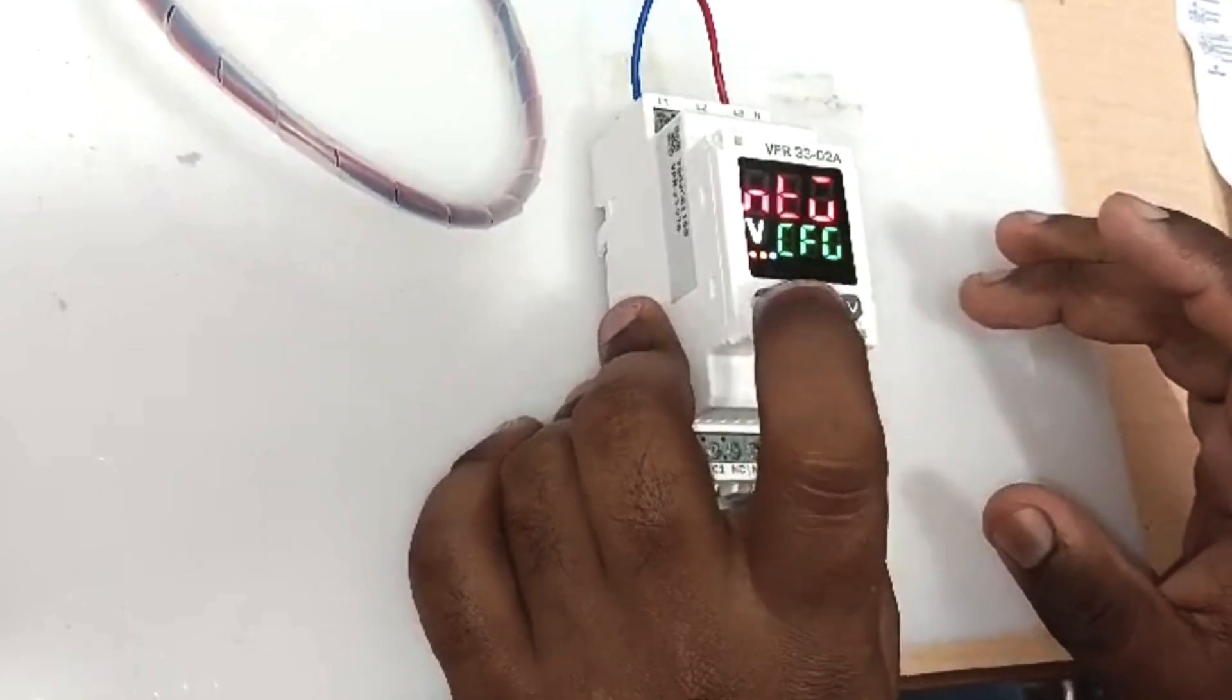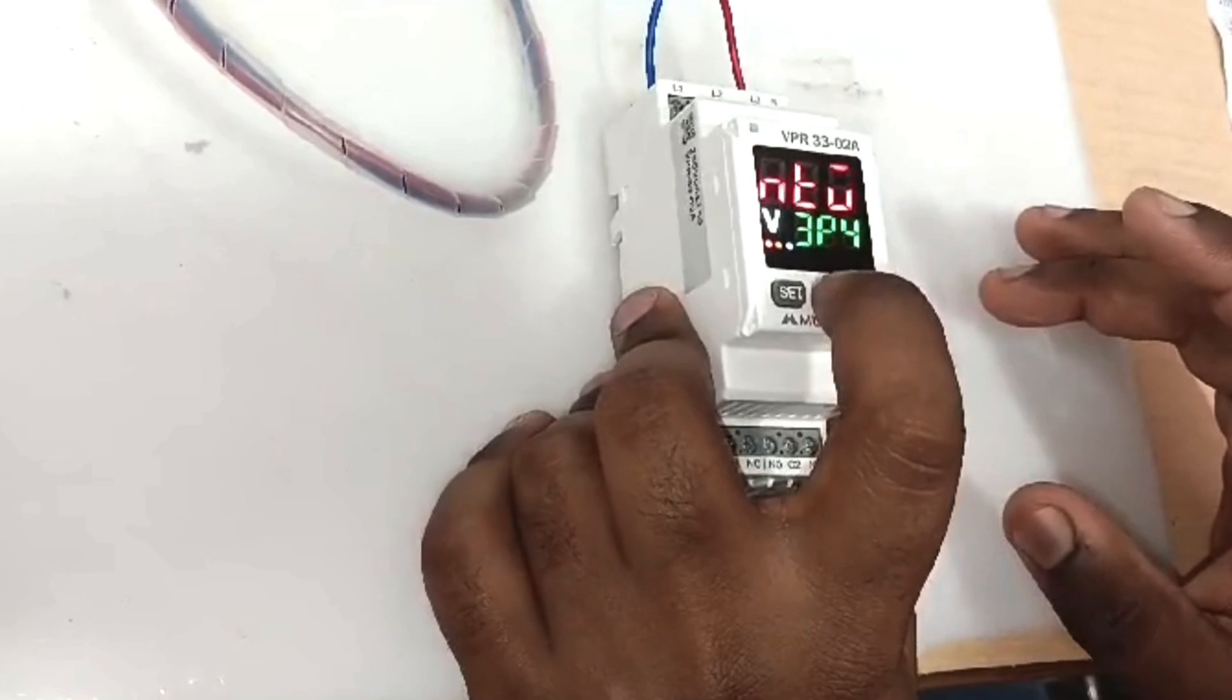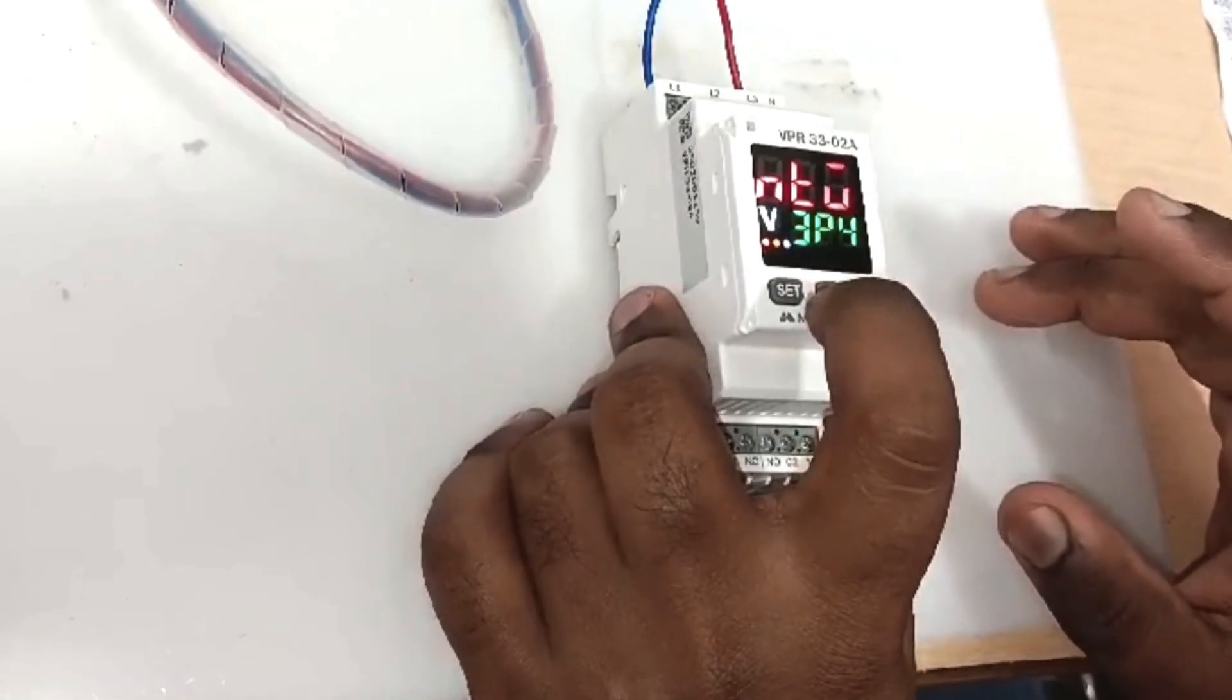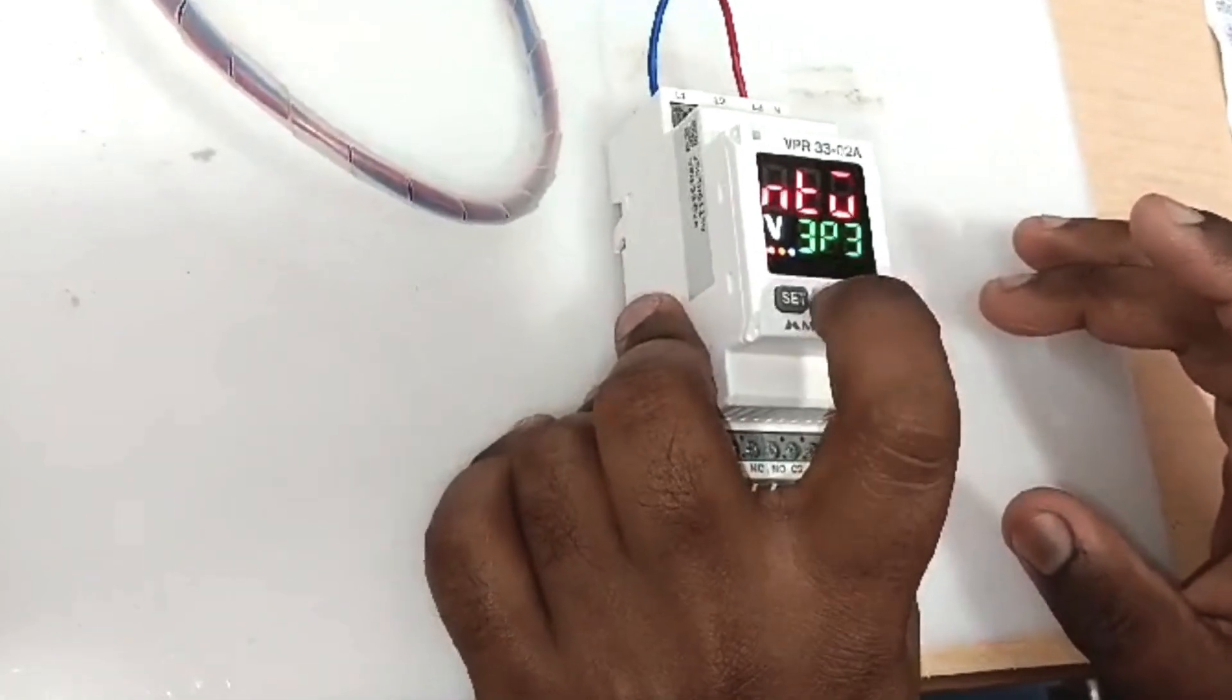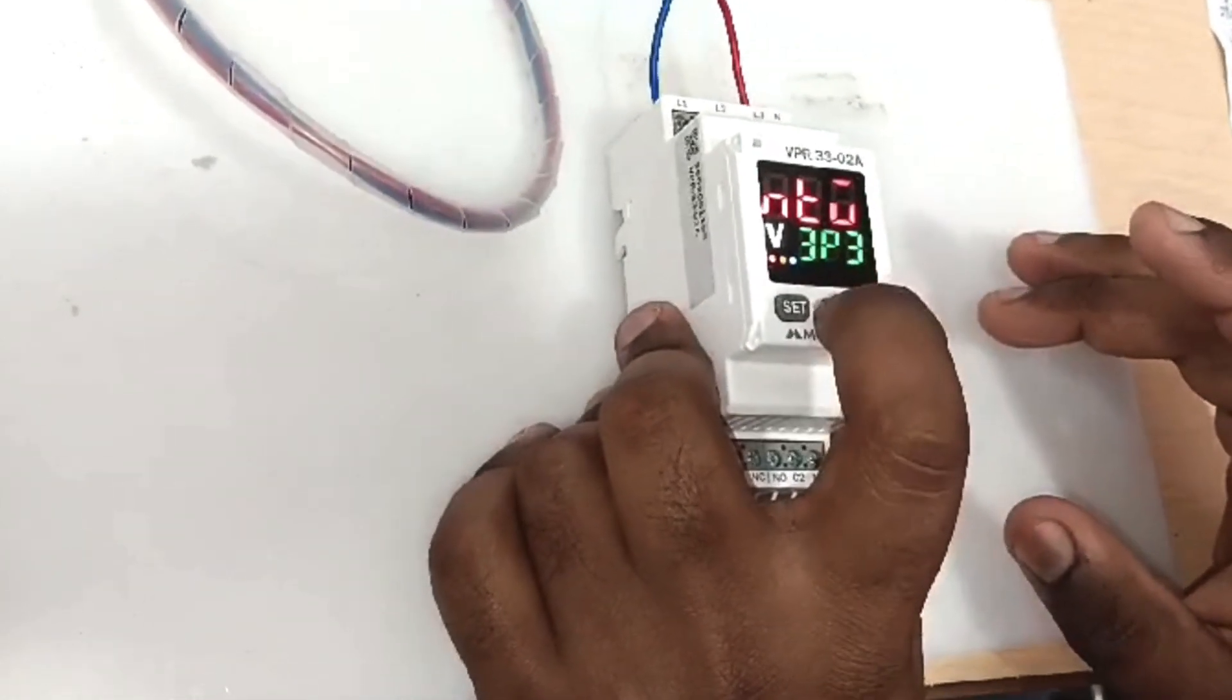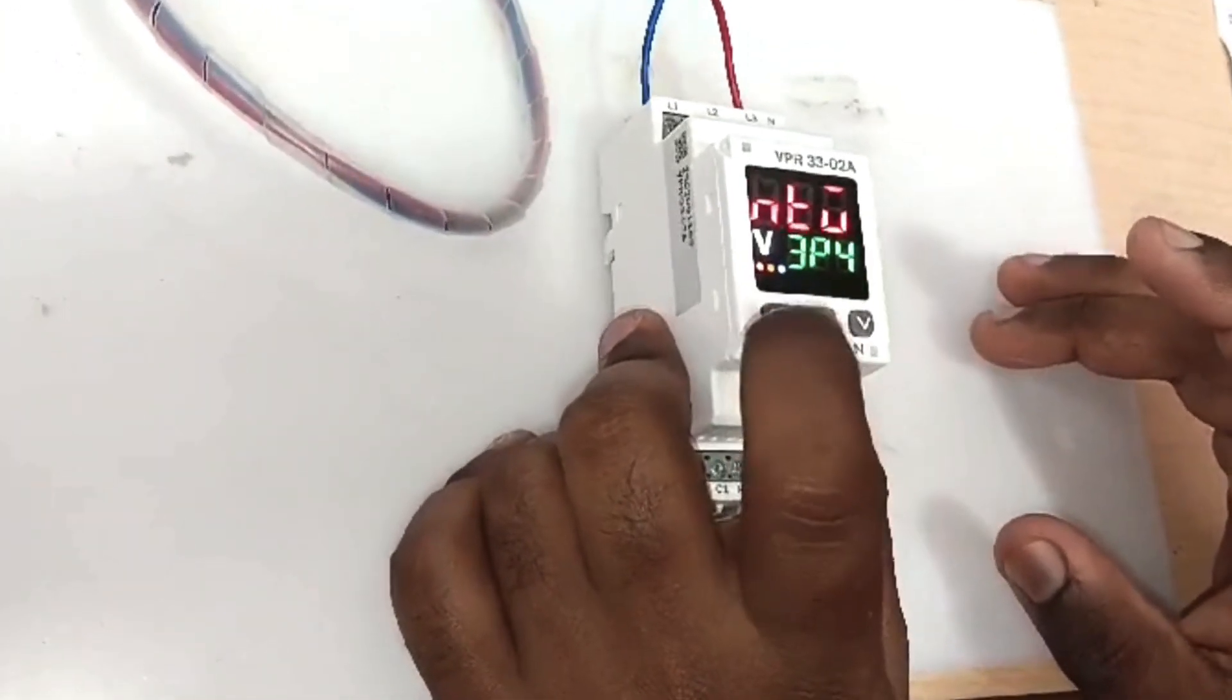Now you can see the network configuration. We have to press set button and then you can use up arrow or down arrow. Plus for setting, now it is in three phase three wire. You can choose single phase two wire, single phase three wire, or others. Now we'll keep it in three phase three wire.